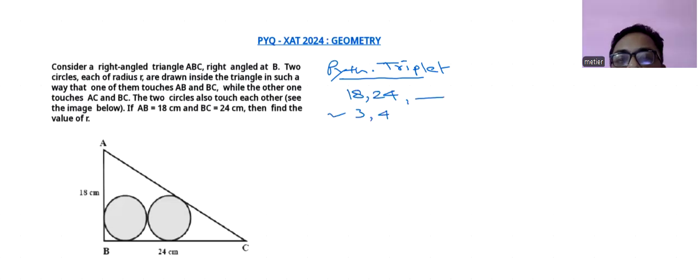Here, 3, 4, 5, each number will be multiplied by 6 to get the sides 18, 24, and the third one will be 30.